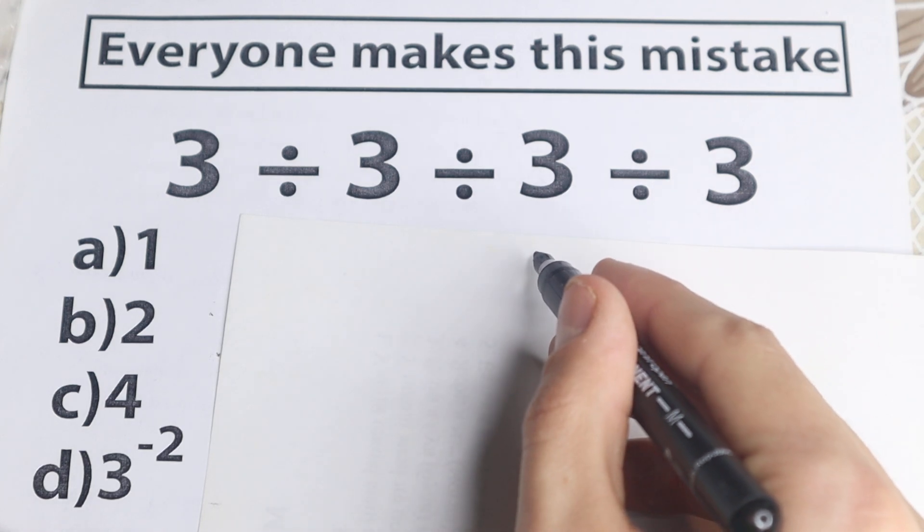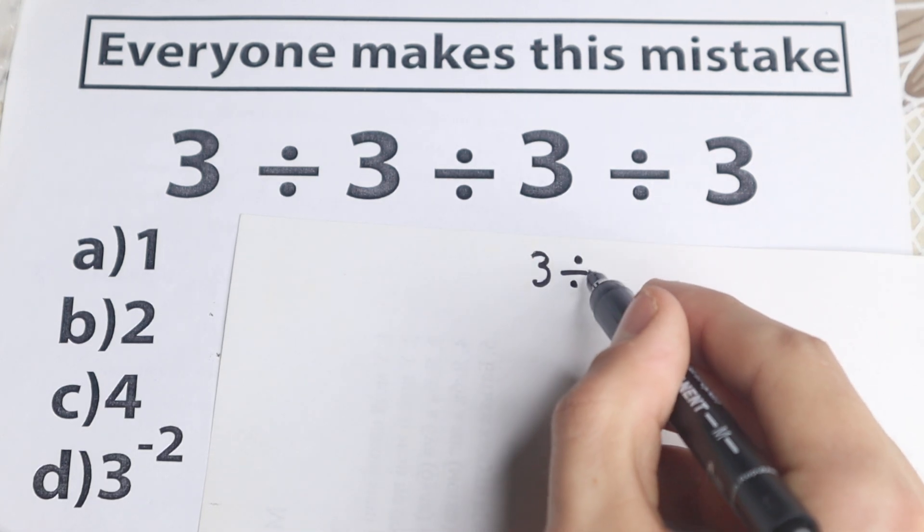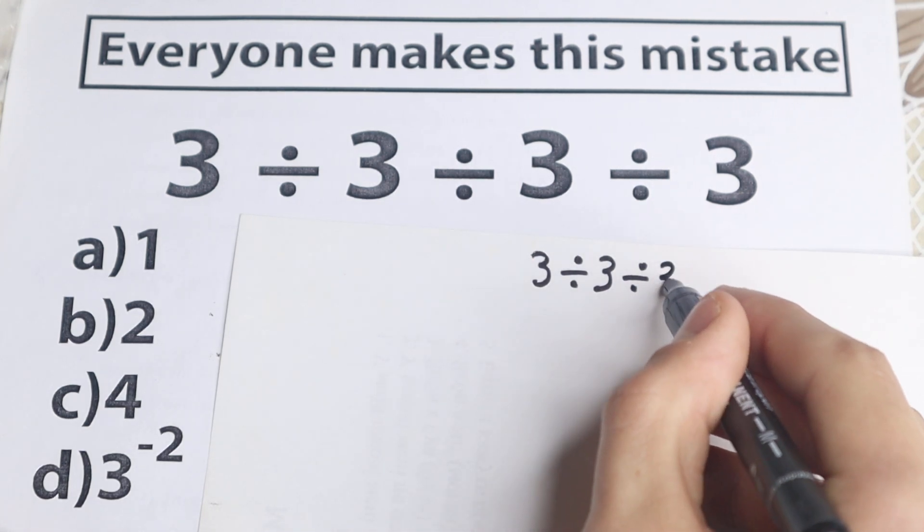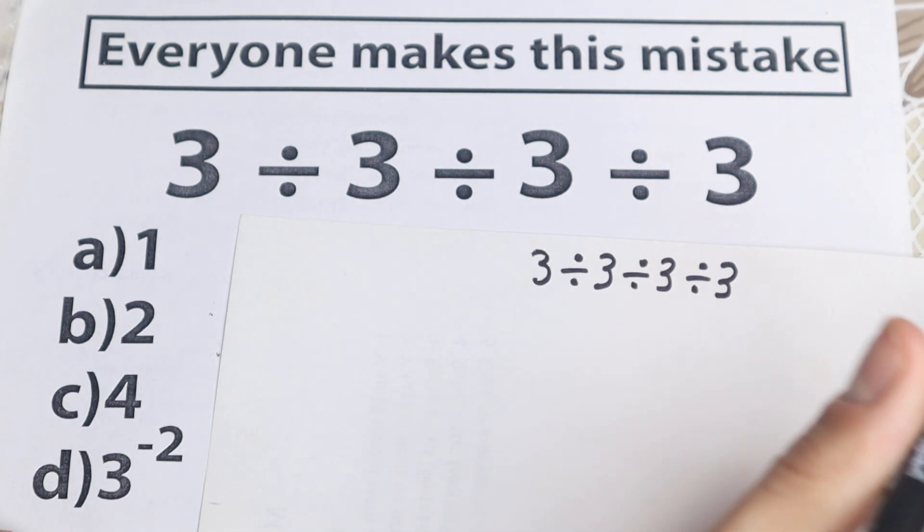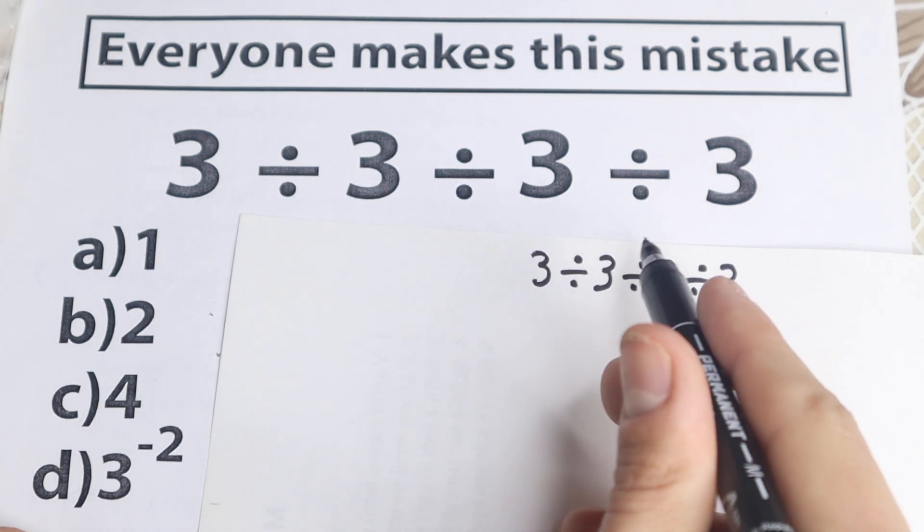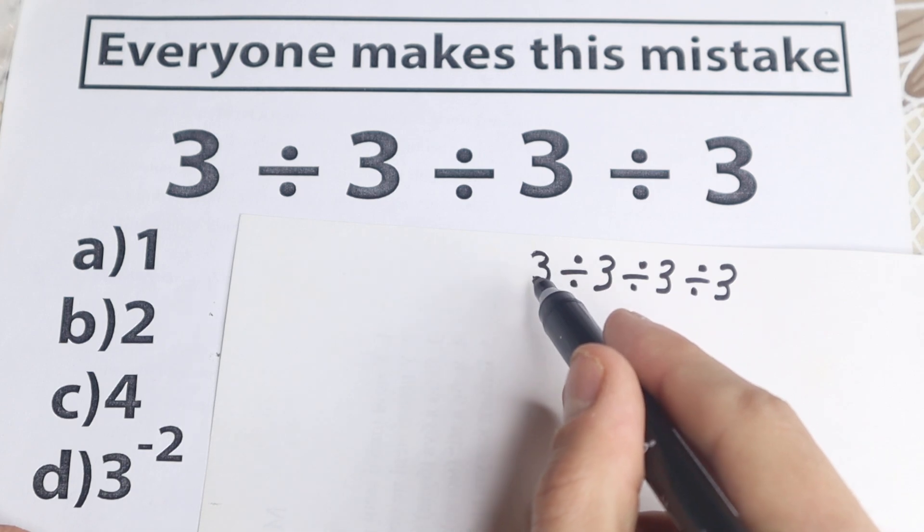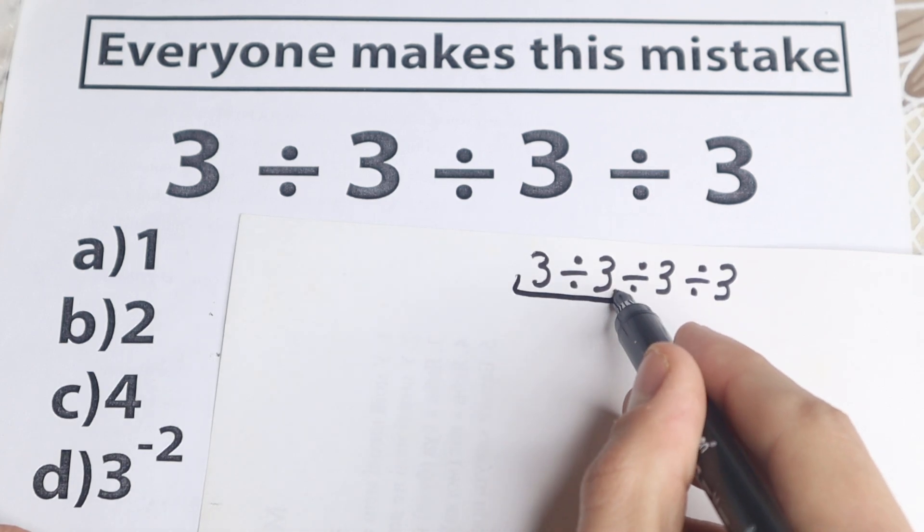Okay, so right here we have this problem, I just want to rewrite it. So 3 divided by 3, divided by 3, divided by 3. There are a lot of students, they solve this problem like that. I don't want to tell you that this is correct or not correct, but right here we have this approach. So 3 divided by 3, a lot of students start with the left hand side, 3 divided by 3, equal to 1.